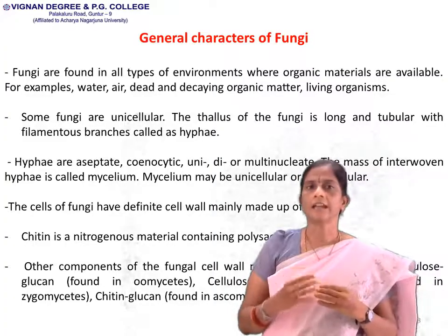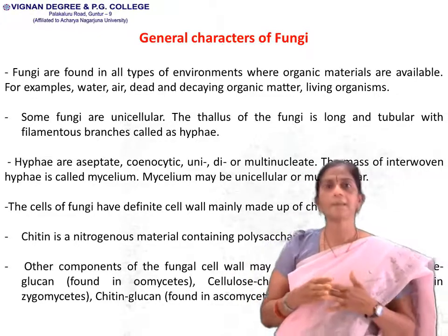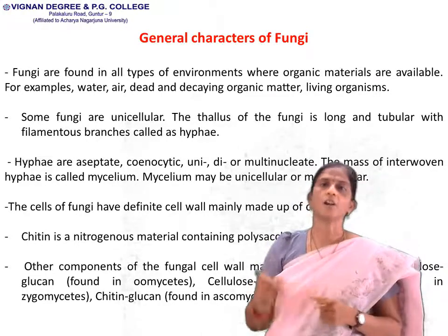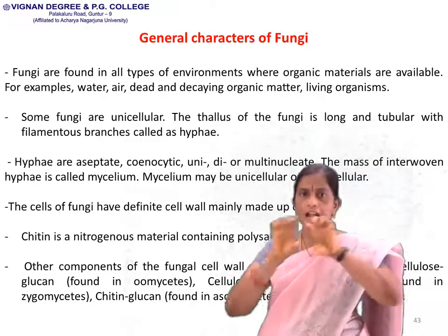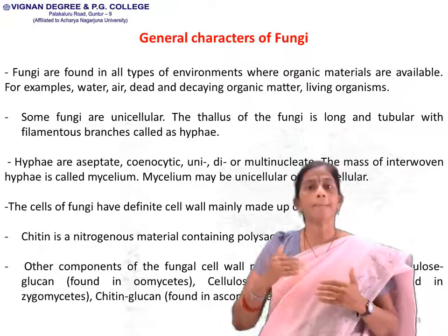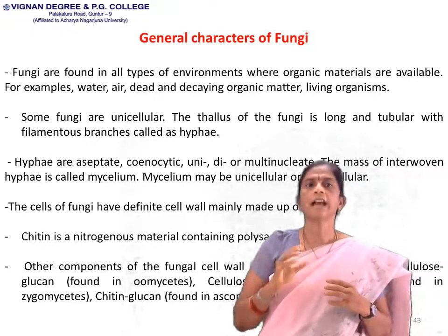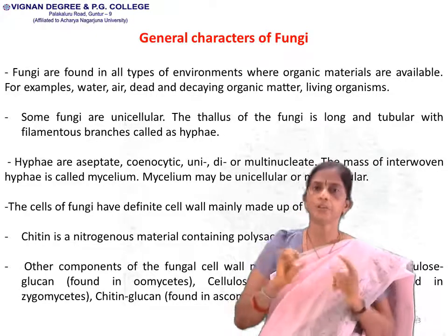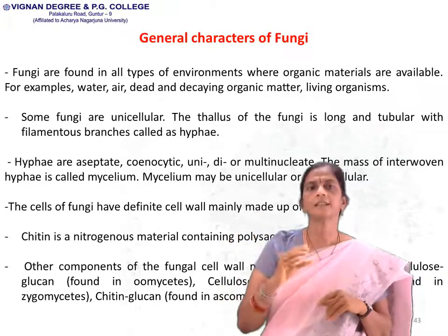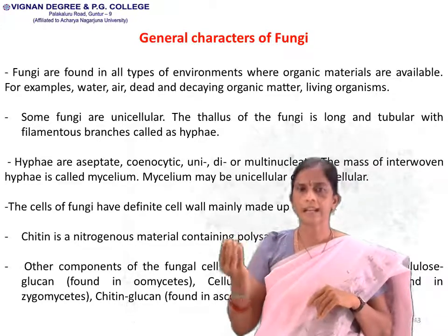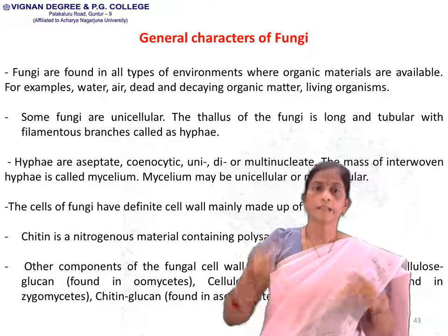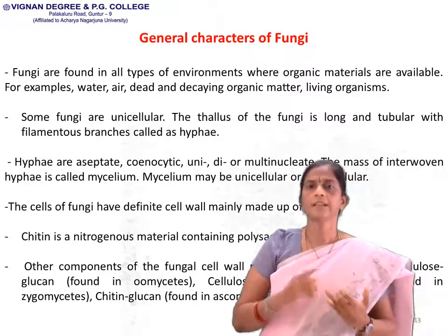Summary of general characters of fungi: fungi are found in all types of environments where organic matter is available — water, air, heat, dead and decaying organic matter, and living organisms. Some fungi are unicellular. The thallus consists of long tubular branched filaments called hyphae, which may be aseptate, coenocytic, or uni- to multi-nucleated. The mass of interwoven hyphae is called mycelium. The cell wall is made of chitin — a nitrogenous polysaccharide. Other components include cellulose, glycogen, chitinogen, and melanin.